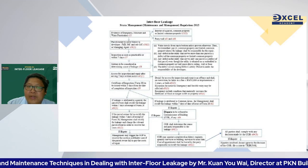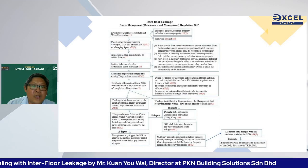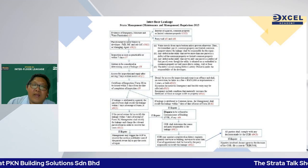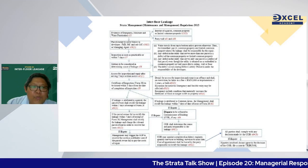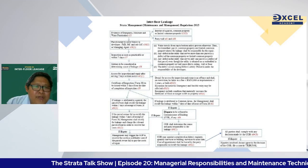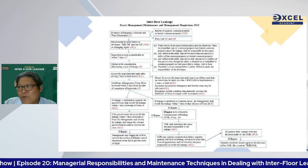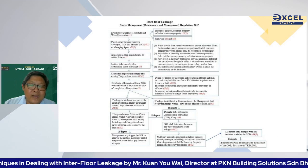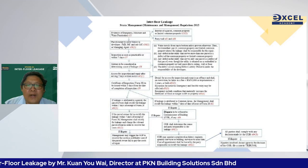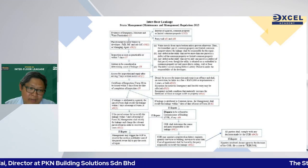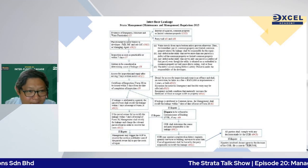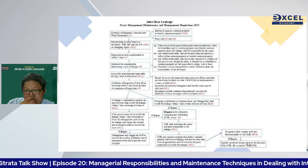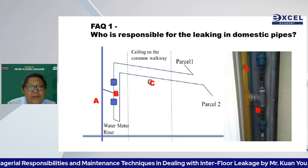Property managers without leak detection knowledge or tools should write a general description on Form 28 — for example, 'slab leaking' or 'pipe leaking' — rather than specifying waterproofing type. There have been incidents where property managers filled in the form incorrectly and were held responsible. Avoid going beyond what you can observe.